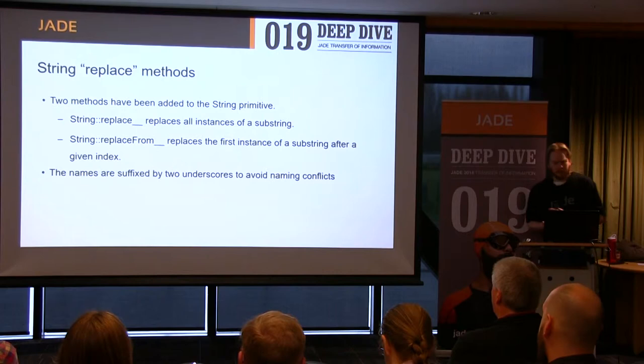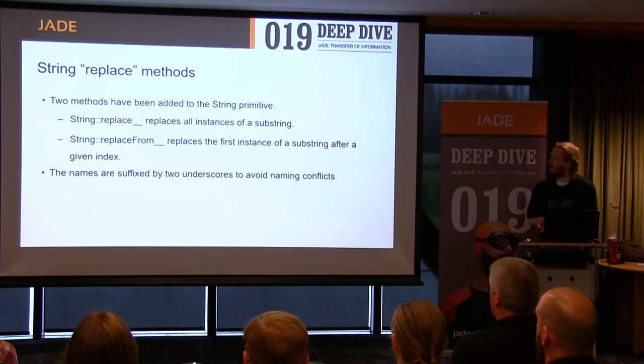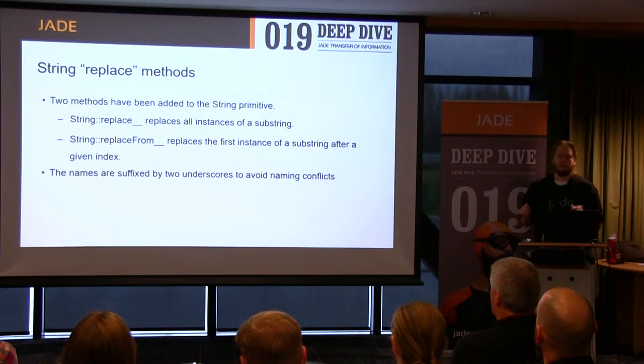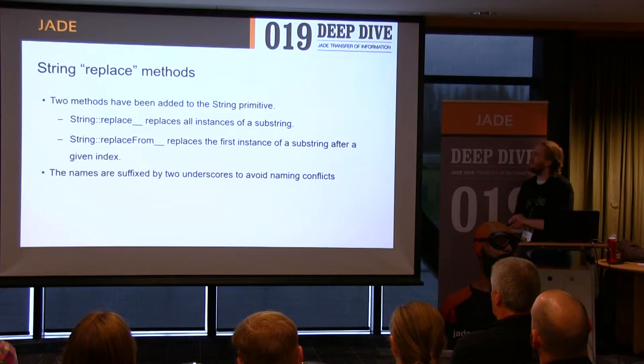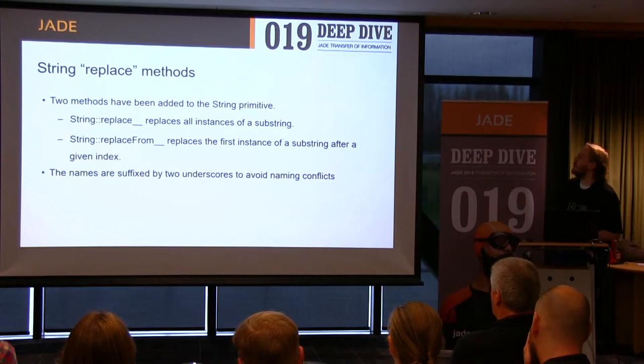That was the big language feature. Now for just a very small one to finish up here — we've got a couple of extra methods on the string primitive type. You'll notice replace and replace from are both ending in double underscore. That's simply to try and avoid naming conflicts. We realized you might have already put a replace method on your string primitive and we don't want to clash with your name. Hopefully no one has a method named replace double underscore — sorry if you do. If you did have a method named that, you might need to rename it before upgrading. That's why it looks a little funny — we wanted to call it replace and replace from, but we didn't want to clash with you.